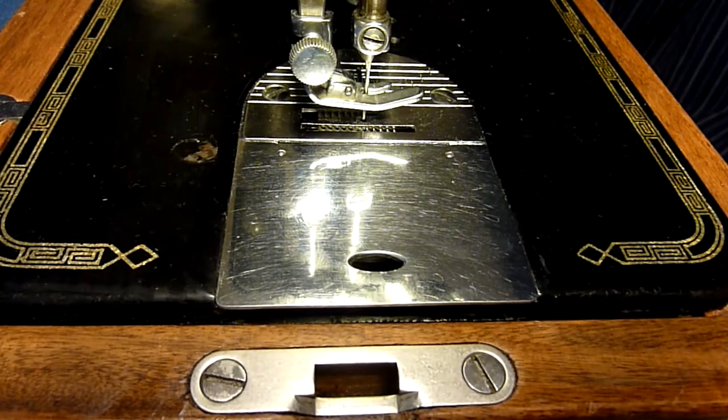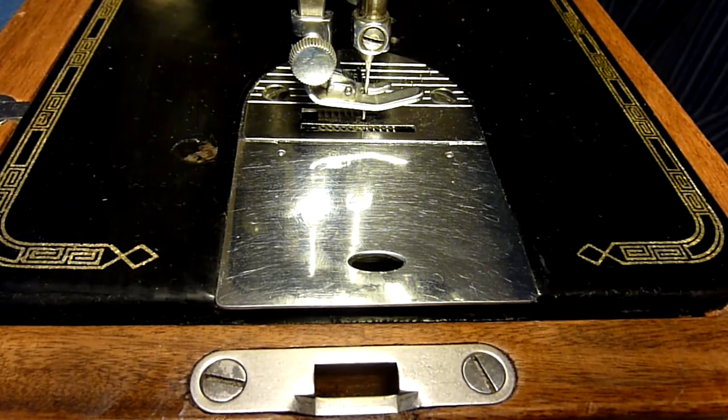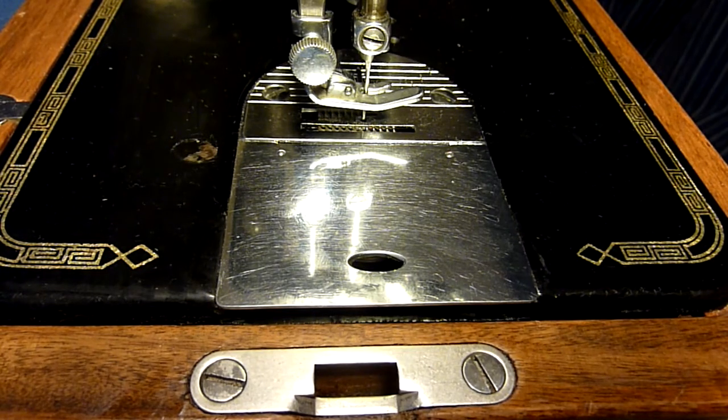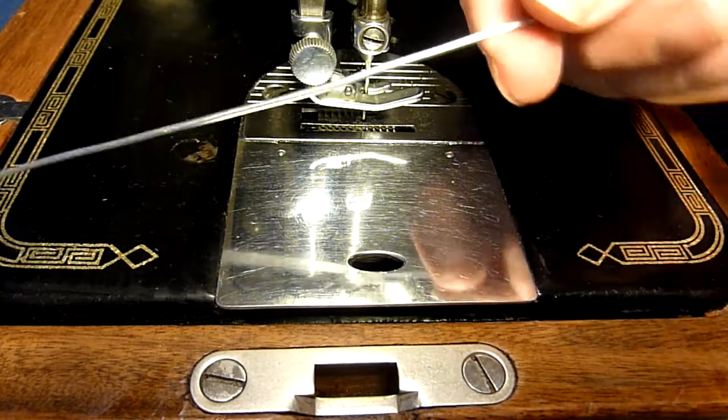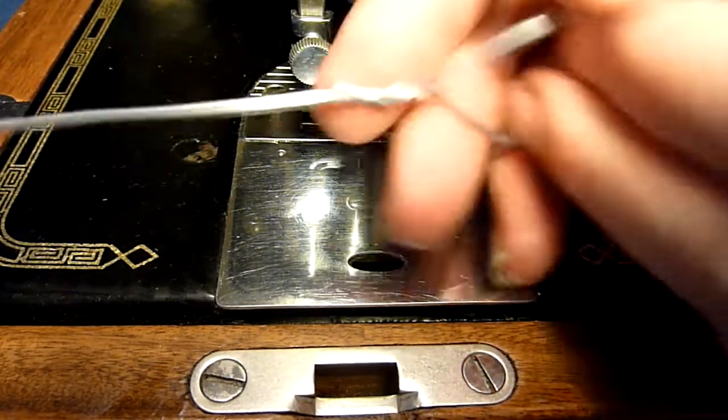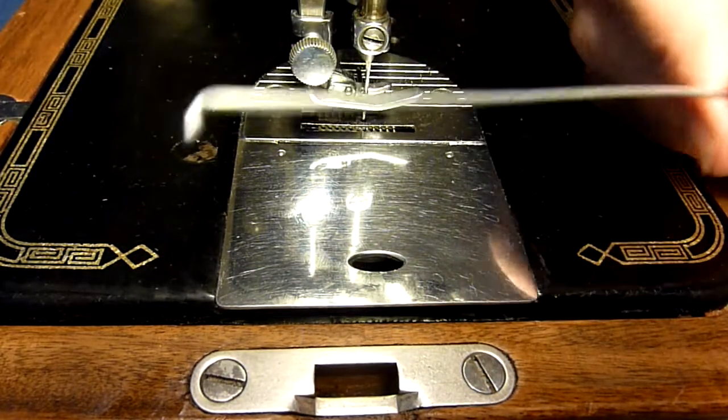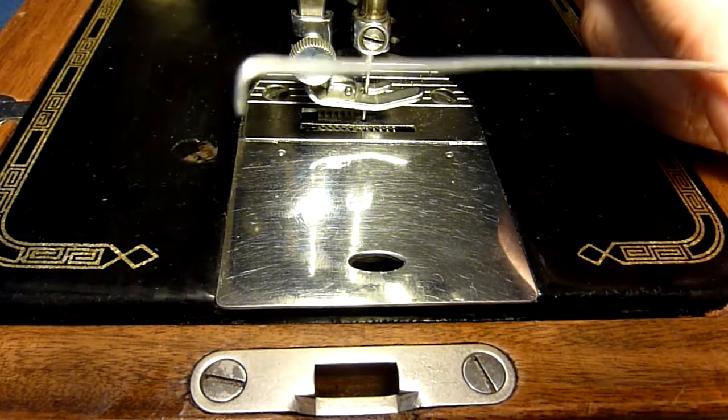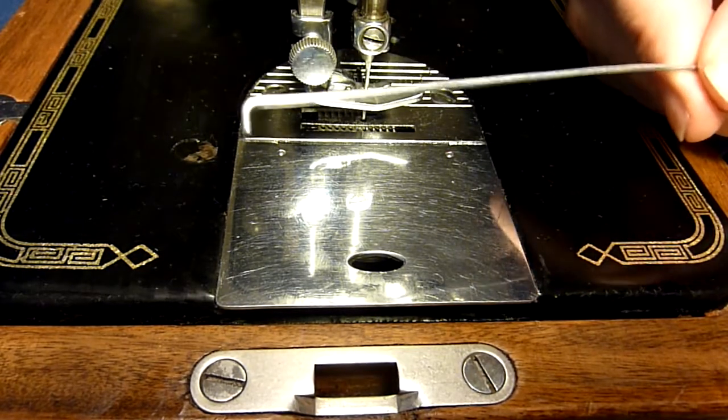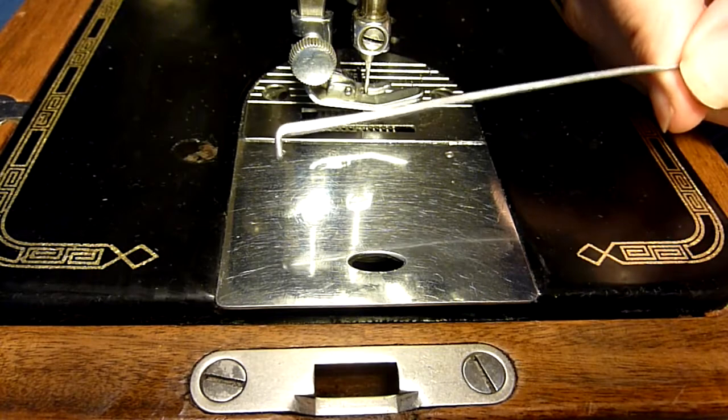This is a Singer 201 and I'd like to show you how to take out the bobbin case and put it in again. To do that I use this tool here. It's like a little hook made of steel wire. It could also be a crooked hook.